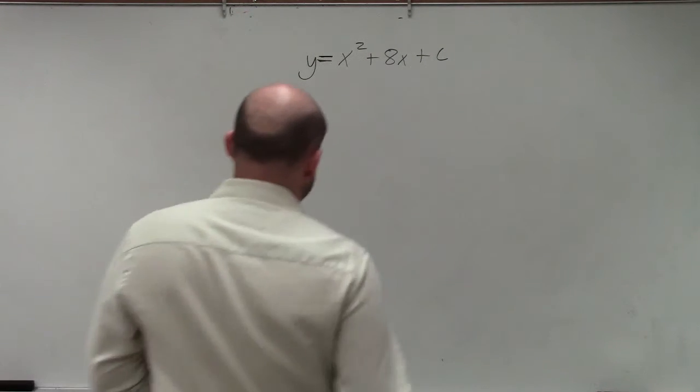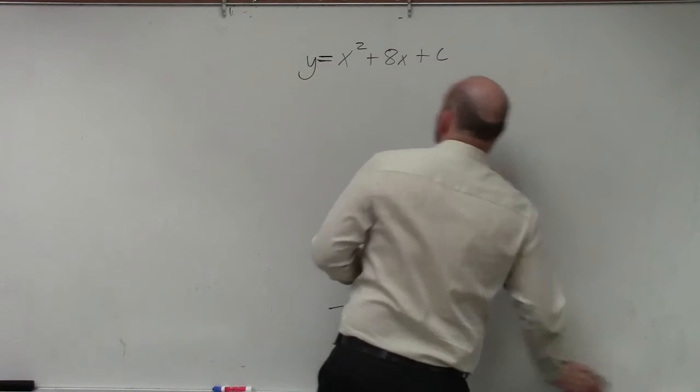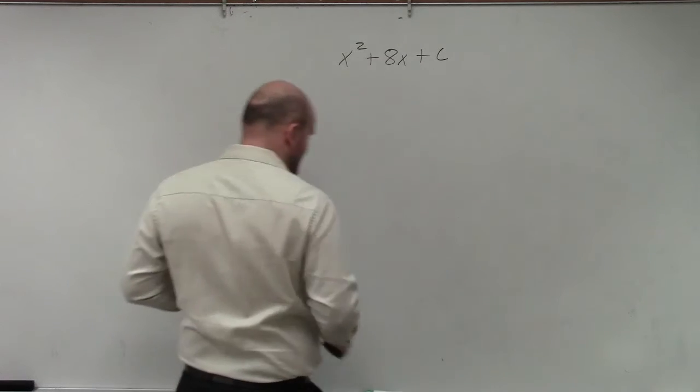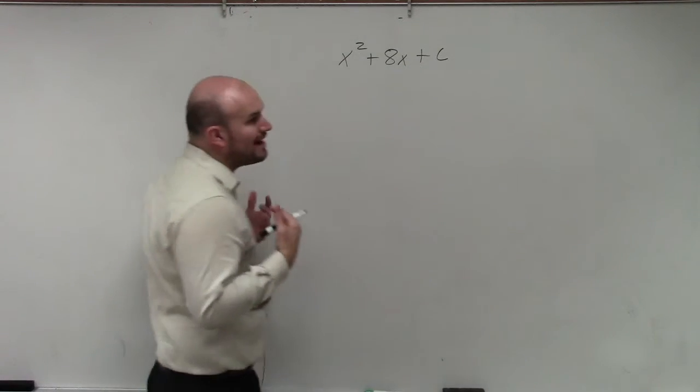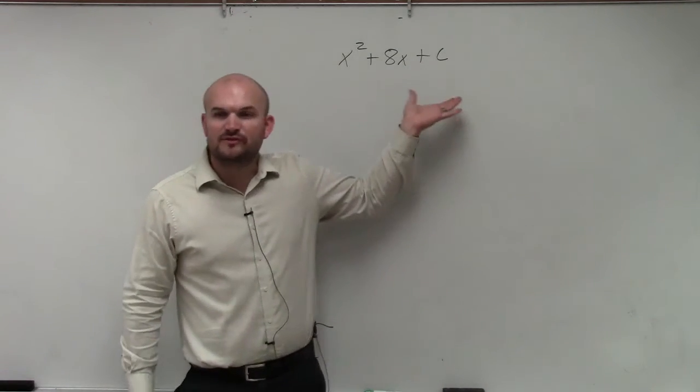Basically, what they're asking us to do is find the value c that completes the square. So what we're trying to do is make this a perfect square trinomial.